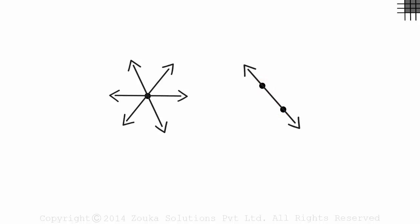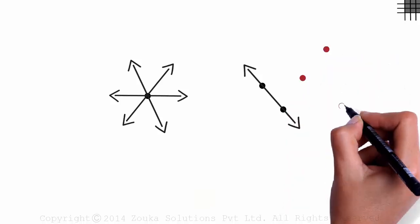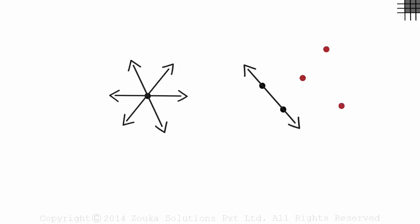Now here's an interesting one. How many lines can be drawn passing through three given points? Okay, look at these three points. We cannot draw a single line passing through all three of these points.